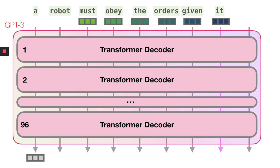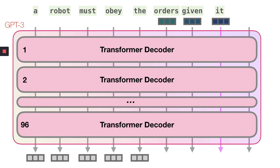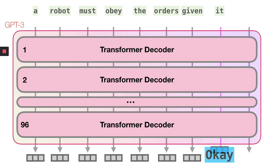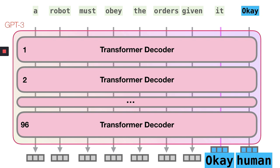The first token is processed through every layer, then the second token goes in and is processed through every layer, and so on for every token in the input sequence. When the last input token is processed, the model starts generating output tokens. For example, if we give the command 'A robot must obey the orders given it,' the model would respond 'okay, human' in this way. This is an x-ray into how the model is structured and how it processes its input and output.